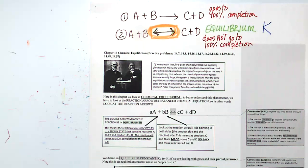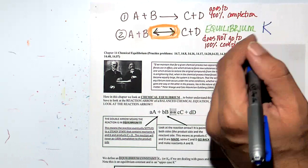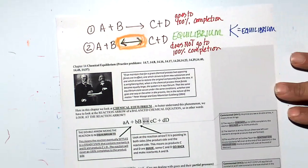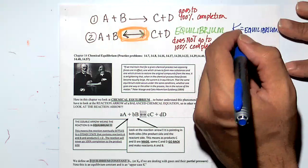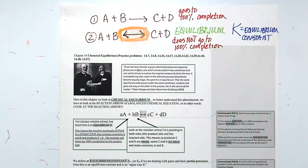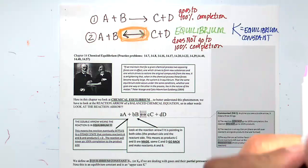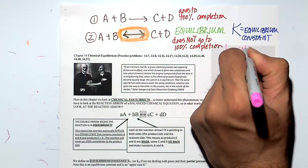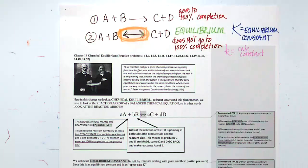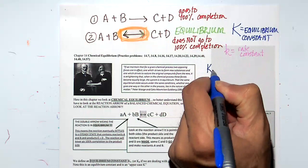Capital K is the equilibrium constant — not to be confused with lowercase k, the rate constant from the previous chapter. This is where a lot of students get confused. Rate constant is lowercase k from chapter 13. The equilibrium constant is capital K from chapter 14. Two totally different things.